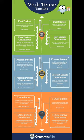Future perfect continuous, used for an action that will continue until some point in the future — for example, 'I will have been writing a book.' Future simple continuous, used for an action that will begin in the future and continue — for example, 'I will be writing a book.'